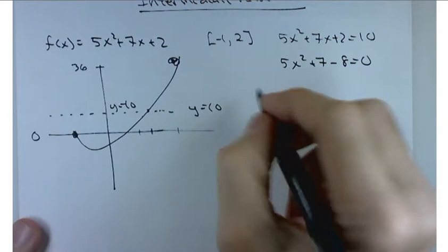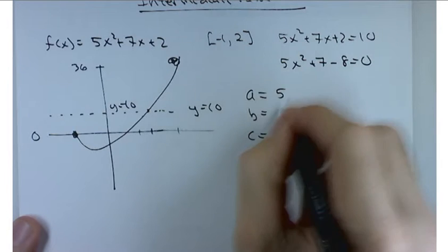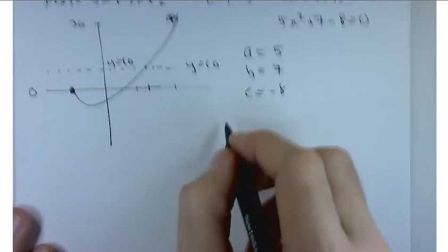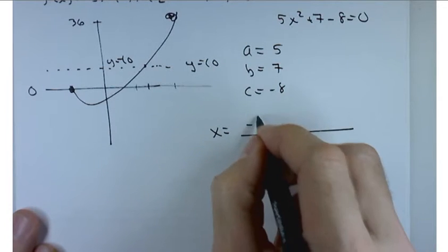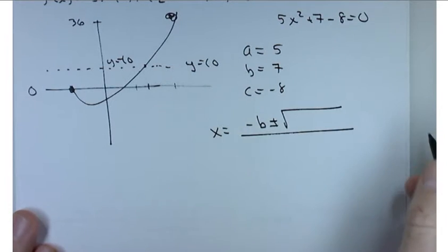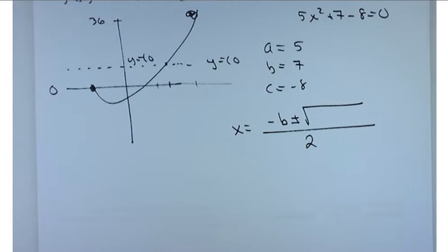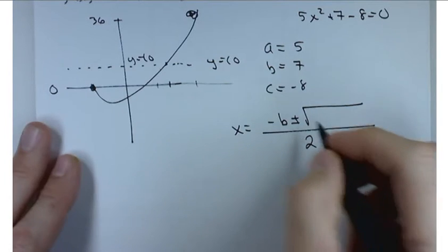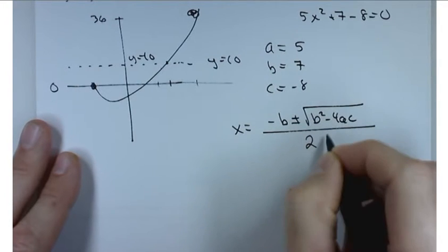Quadratic formula. Good. So quadratic formula, A, B, and C, 5, 7, negative 8. So let's practice the quadratic formula a little bit. I'm curious. How many of you have had instructors that sang the quadratic formula to say a college fight song? Yay. How many people want to hear me sing? No. It ain't going to happen.